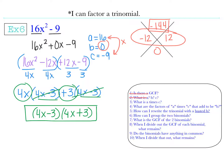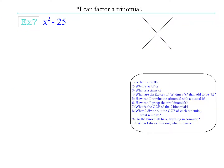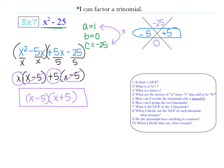Next, x squared minus 25 - also only two terms, like the last example. Pause the video and see if you can work through the process. Hopefully you ended up with x minus 5 times x plus 5. Go ahead and move on to example 8.